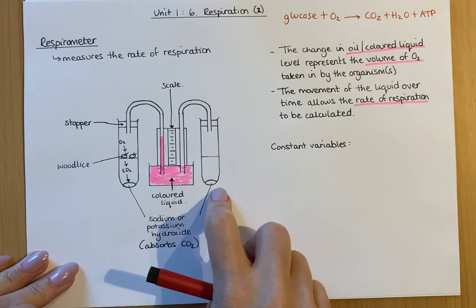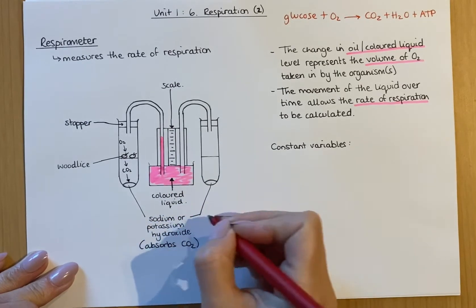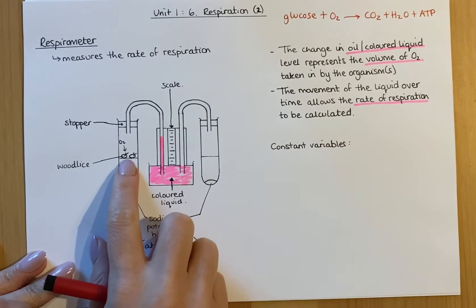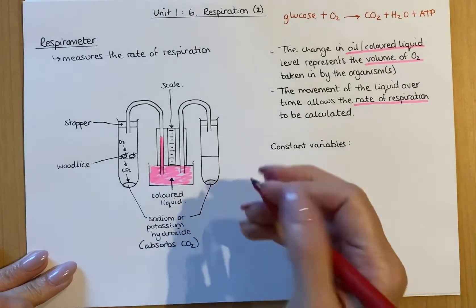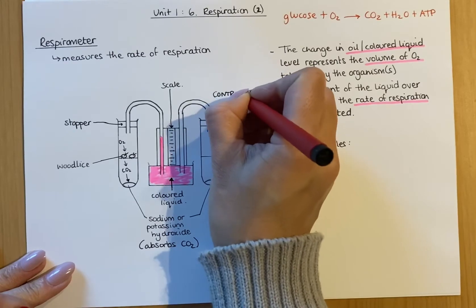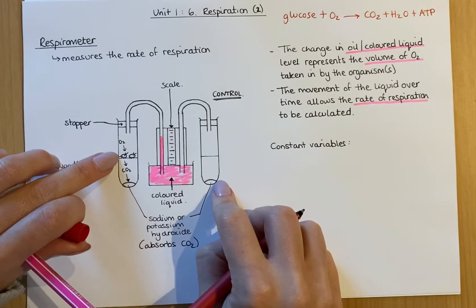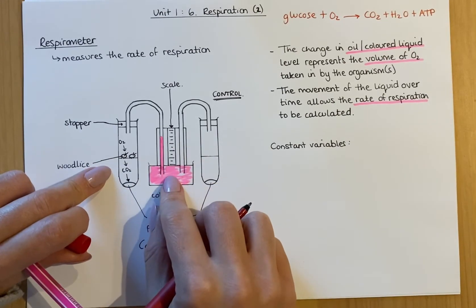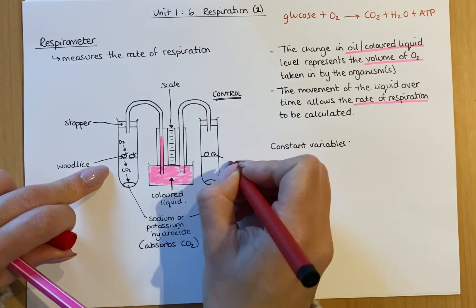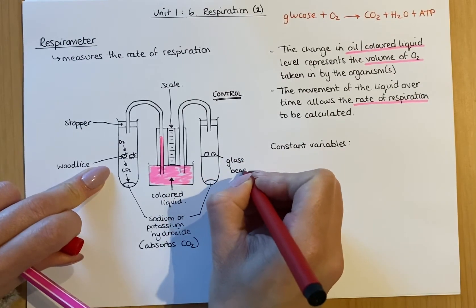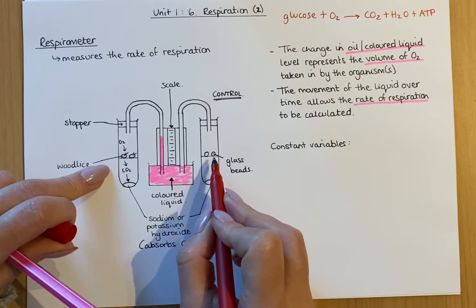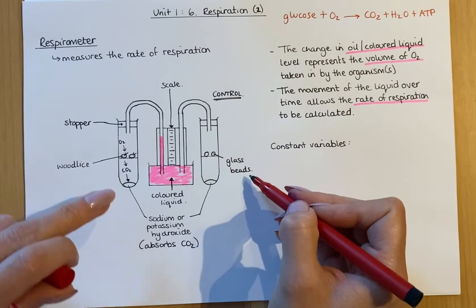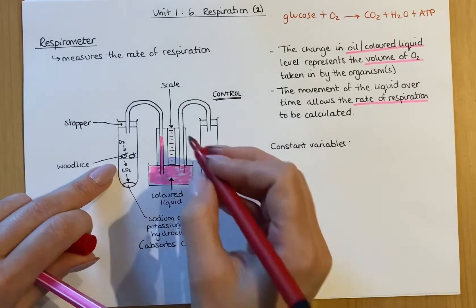There's another part of this diagram on the other side. It shows the same set-up except it doesn't have woodlice in it. To prove that the woodlice are the thing causing the change in the liquid, this second set-up is called a control. You would put in some glass beads that are the same size and the same number as the woodlice. Glass beads are not alive — they don't respire, they don't take in oxygen, and they don't give out carbon dioxide. So there's no change in the liquid level here. The control proves that the woodlice are respiring and are causing the change in the liquid level.